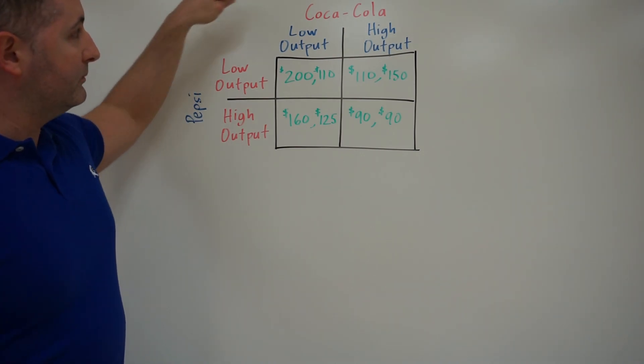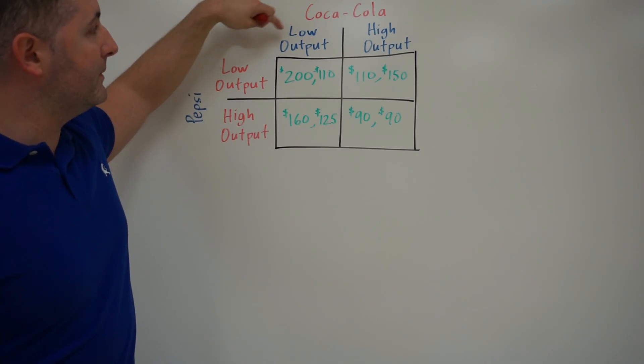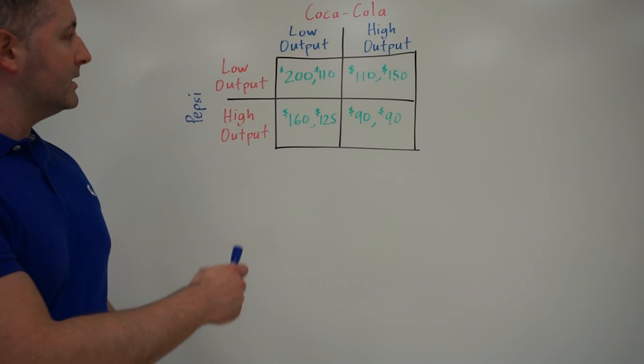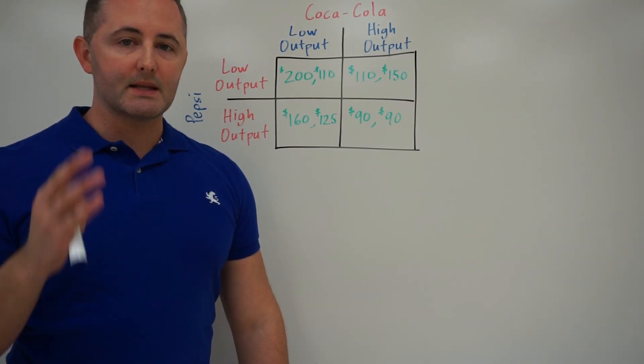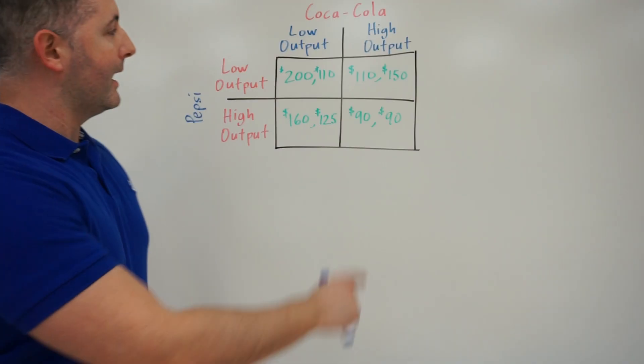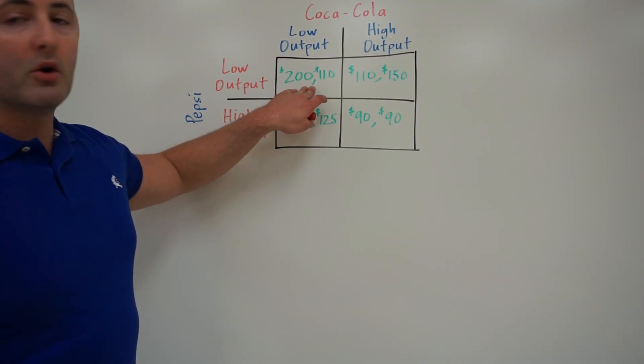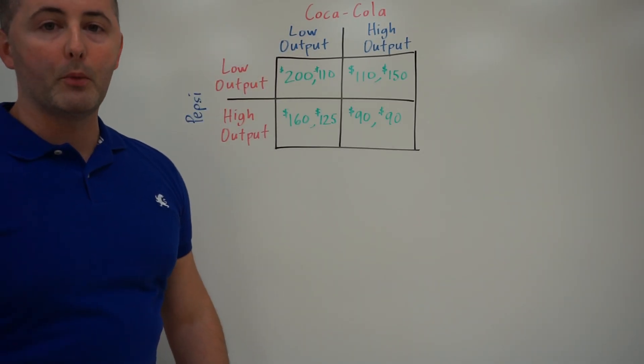So first of all, we see that each of them has the same two options, right? Coke can either have low output or high output, Pepsi either low output or high output. So what do these numbers represent? These represent the profits that each of these firms would make if they choose these two combinations. So this quadrant reflects what happens if they both choose a low level of output.